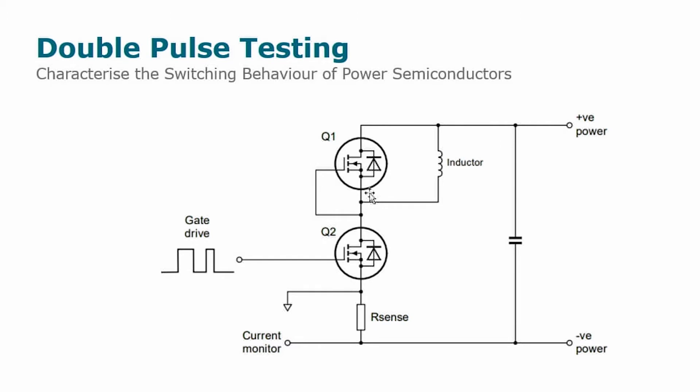When we model the devices, what we look at is the second turn on of the low side device, because it's when we can assess the reverse recovery behavior of the high side MOSFET and we can model the QRR area of the current.